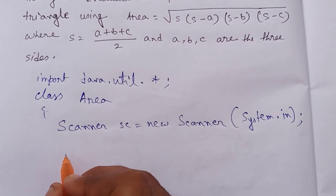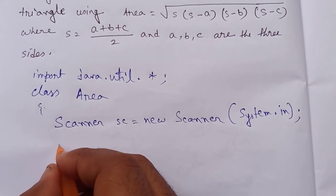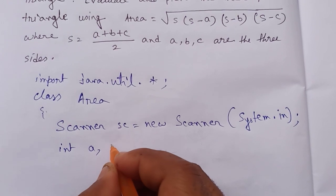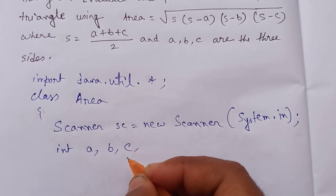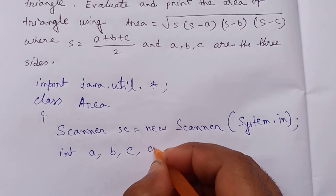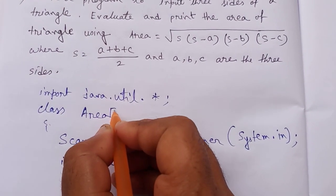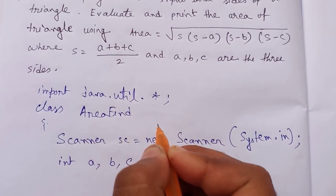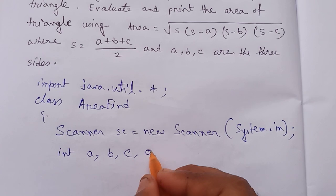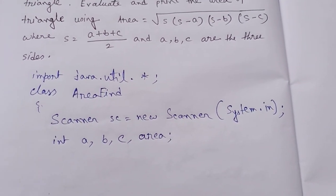I am declaring three variables: int a, b, c. I am changing the class name to AreaFind — AreaFind is my class name. These three variables a, b, c are taken as global variables.